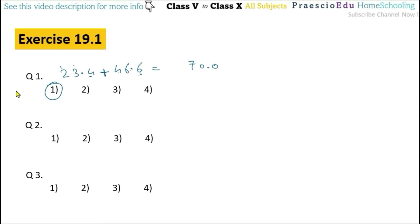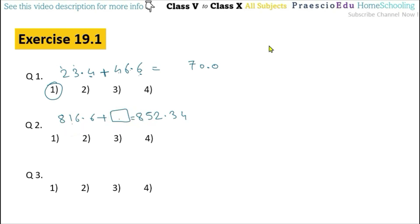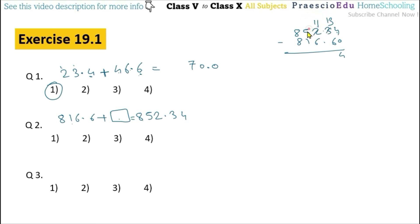Now question number 2: 816.6 plus a box equals 852.34. Which number should be in the box? To find out this number, from the total we will deduct the known number. So 852.34 minus 816.60. 4 minus 0 is 4; 3 minus 6 cannot be done, so borrow — 13 minus 6 is 7. Decimal point as it is. Then 11 minus 6 is 5; 4 minus 1 is 3; 8 minus 8 is 0. So the answer is 35.74, given in option number 3.